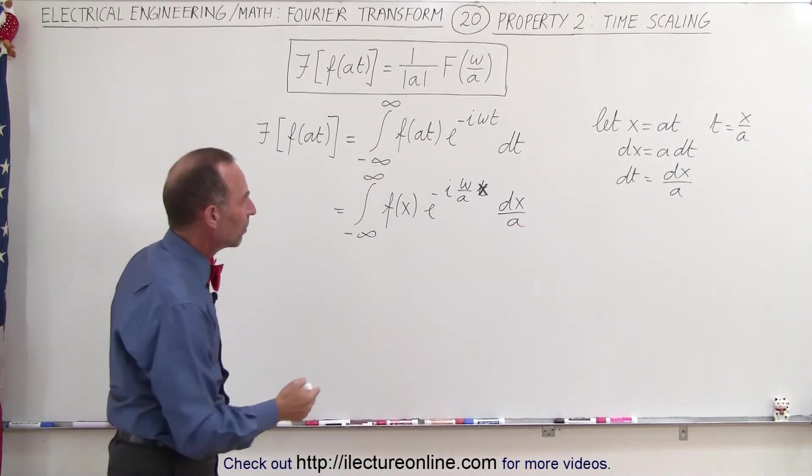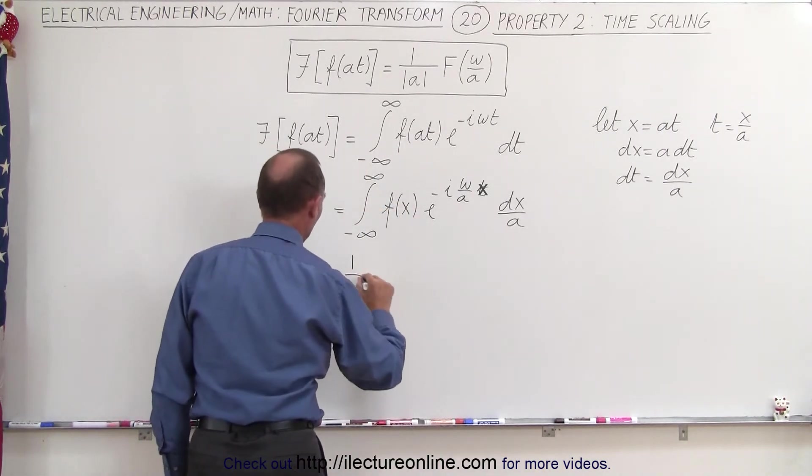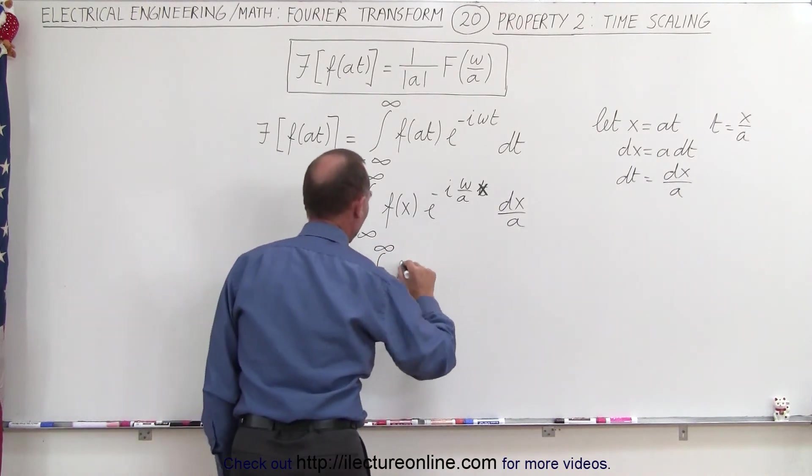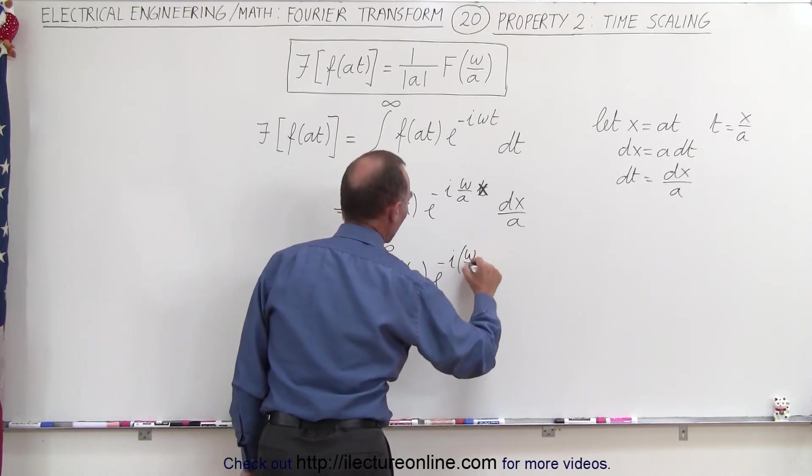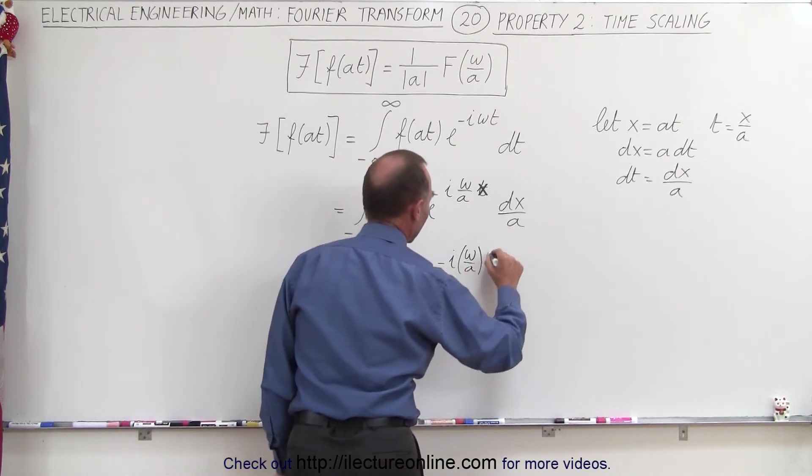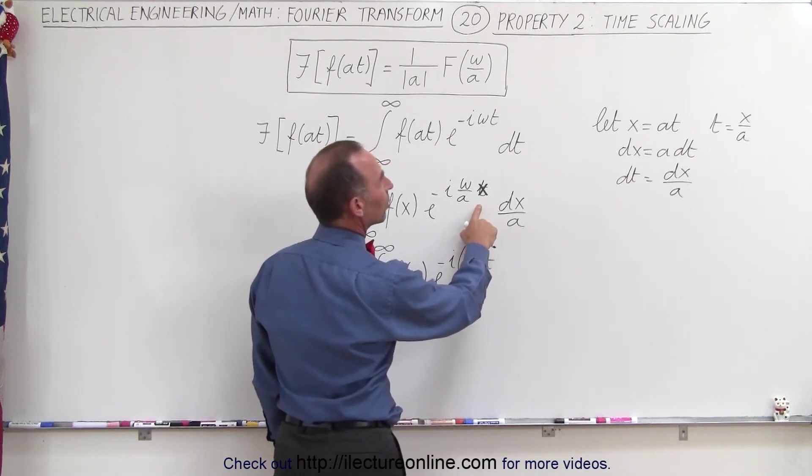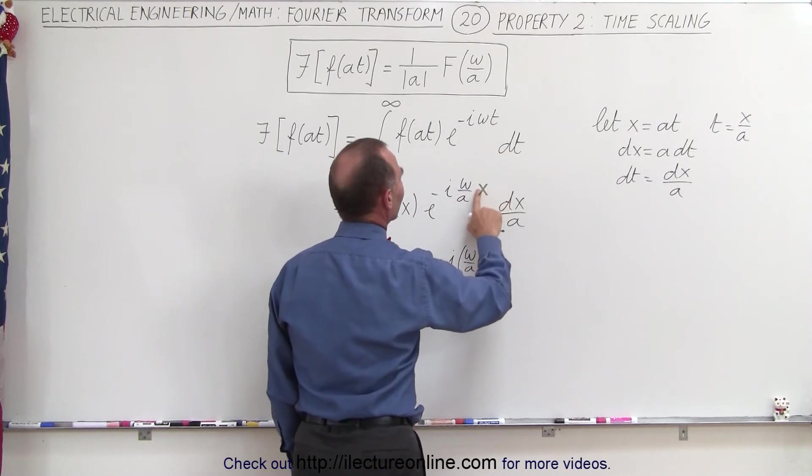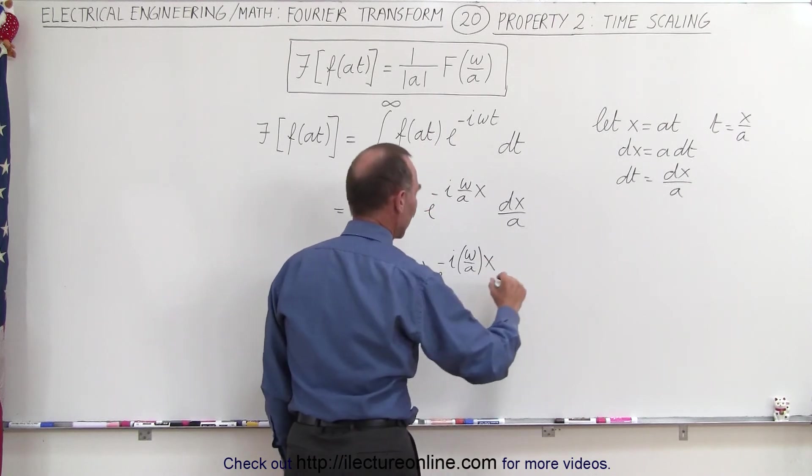Now things are beginning to take shape. We can take the a outside the integral sign. So this becomes equal to 1 over a times the integral from minus infinity to infinity of f of x times e to the minus i omega over a times t. Wait a minute. I don't want a t there. The t is being replaced by x over a. So this is an x. This is no longer a t. So this is now x. And then we have dx.